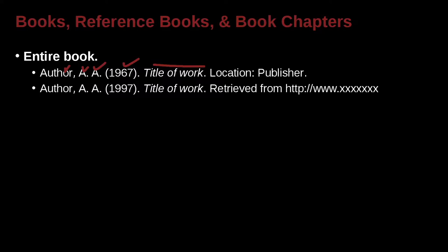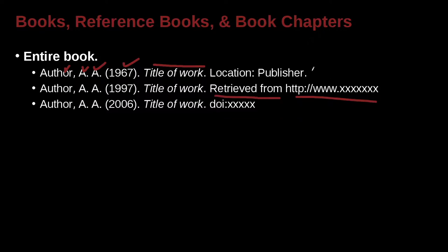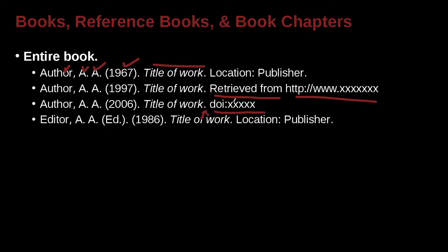Here's an example of an online source where we're using a URL, and again it's very similar. Only instead of a location and a publisher, we have the words 'retrieved from' and then the URL. Another way we could do this is the same approach, only at the end we add DOI — the document object identifier. So that is another way. Three different ways that you can do that.